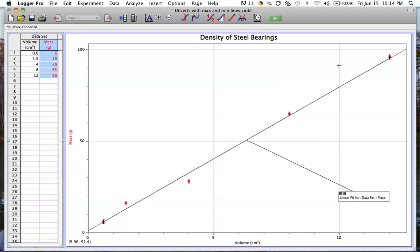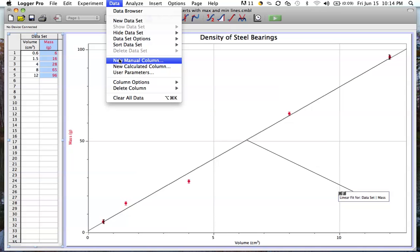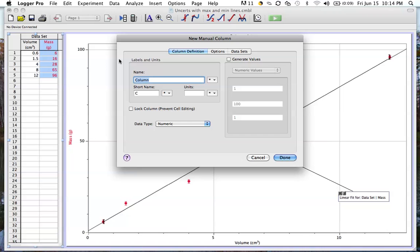For my volume, since I use three different instruments, I have three different uncertainties for this data. So to add in those uncertainties, I'm going to go to data, new manual column.